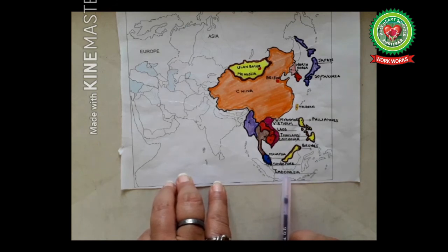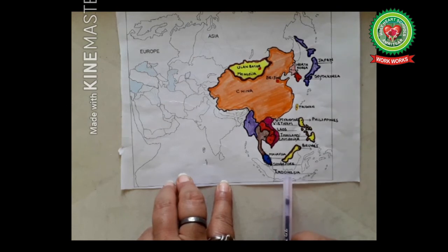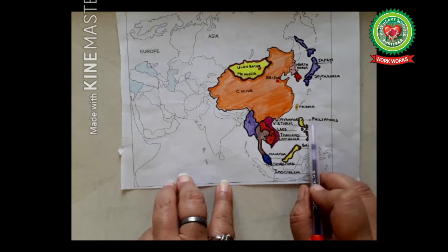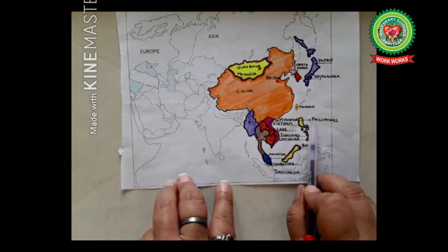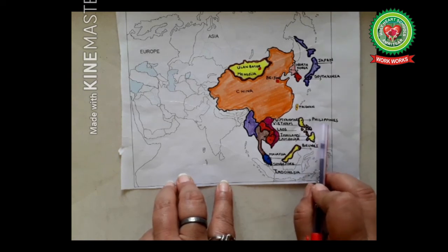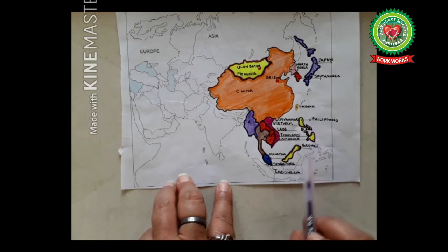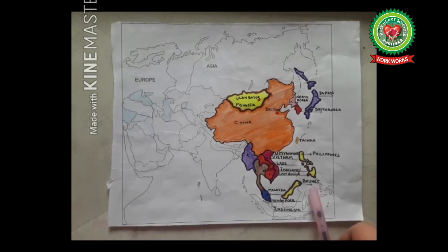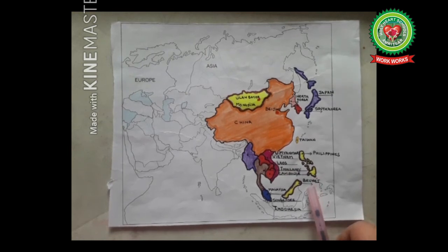After Laos, we have Indonesia — capital is Jakarta. Indonesia is the fourth most populous country in the world and is famous for its wildlife and geological wonders. Next is the Philippines — it is an island country with approximately 7,000 islands. The capital of the Philippines is Manila. Finally, the last one is Brunei — capital is Bandar Seri Begawan. Brunei is a tiny nation on the island of Borneo, known for its beaches and biodiverse rainforest. With that, we have completed our East Asia and Southeast Asian countries.